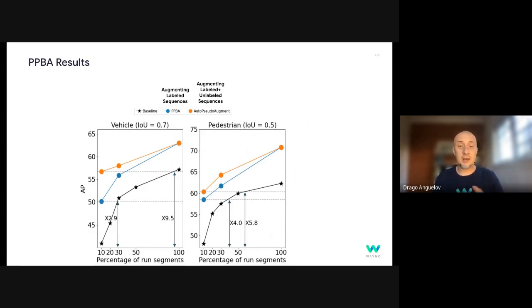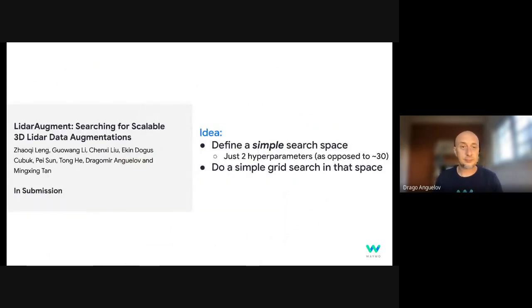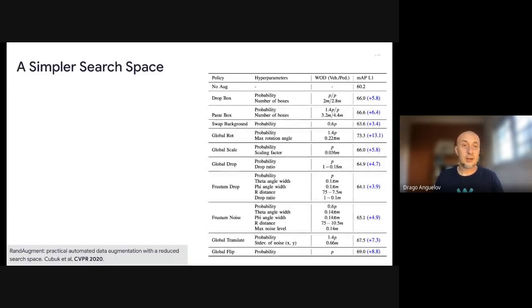And so we set ourselves the question, can we do better and simpler? And so this is a work in submission, but we're presenting it. The idea here is, can we define a simple search space with just two hyperparameters as opposed to close to 30 in the general case? And then we do a simple grid search in that space to explore it better. And this idea is inspired by the RandAugment work by Google Brain from CVPR 2020. And the high level idea here is we want to factorize the set of searches.